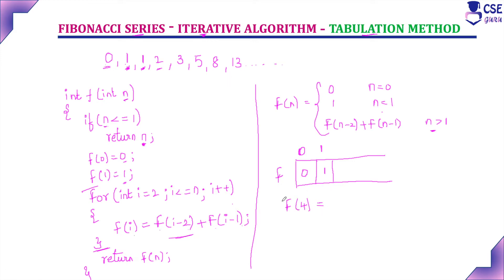To generate f(4), with n = 4: check the condition — is 4 less than or equal to 1? Condition fails. So we initialize f[0] = 0 and f[1] = 1, then enter the for loop with i = 2. Check: is 2 less than or equal to 4? Condition true. Generate f[2]: f[2] = f[0] + f[1] = 0 + 1 = 1. So f[2] position gets the value 1.